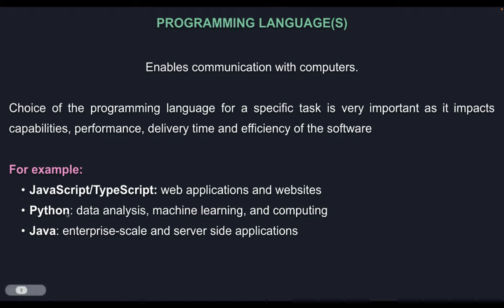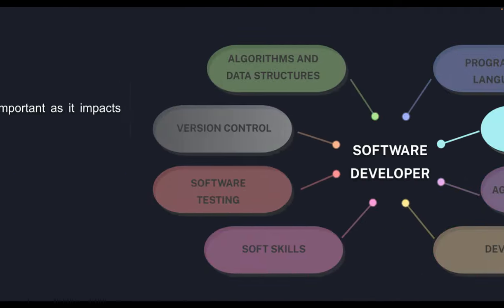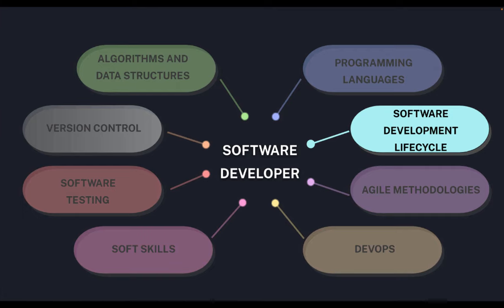Python has a whole ecosystem — if you want to go for data analytics, machine learning, automation, Python is the way to go. Java is one of the most popular languages for enterprise-scale and server-side applications, with a large ecosystem of frameworks and libraries including Spring, JPA, and Hibernate. As a developer, you have to think of the whole software development life cycle.